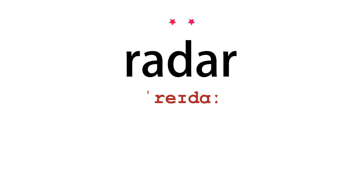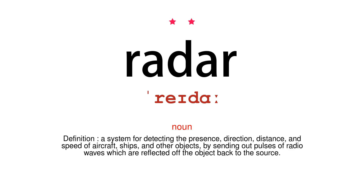Radar. Noun. Definition: A system for detecting the presence, direction, distance, and speed of aircraft, ships, and other objects, by sending out pulses of radio waves which are reflected off the object back to the source.